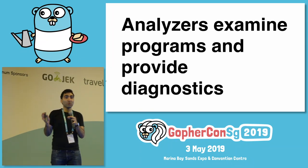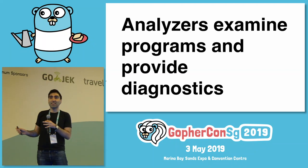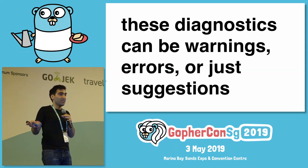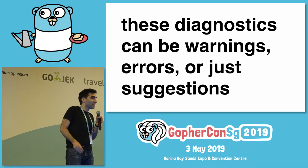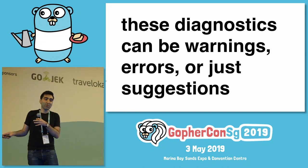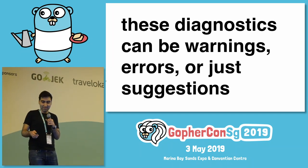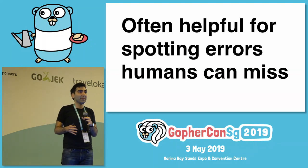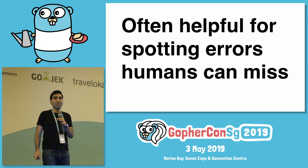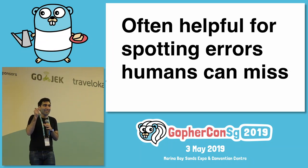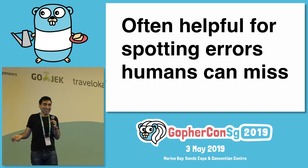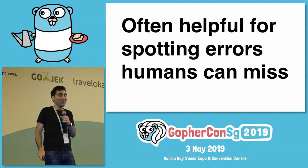So again, an analyzer looks at your program and provides diagnostics. The diagnostics can be warnings, errors, or just suggestions — like 'your code is broken,' or 'maybe if you write it this way it'll be more clear.' What I want to focus on is that they're helpful for spotting errors that humans can miss. It's so easy to write code with subtly wrong errors that you can spend forever looking at. But computers — they'll always get it right. So we should rely on the computer to help us.